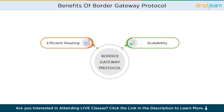Scalability. BGP is highly scalable, allowing the internet to accommodate the immense growth of networks and users. With BGP, the internet can seamlessly handle the increasing number of connected devices and networks, ensuring smooth operations even as the internet expands.